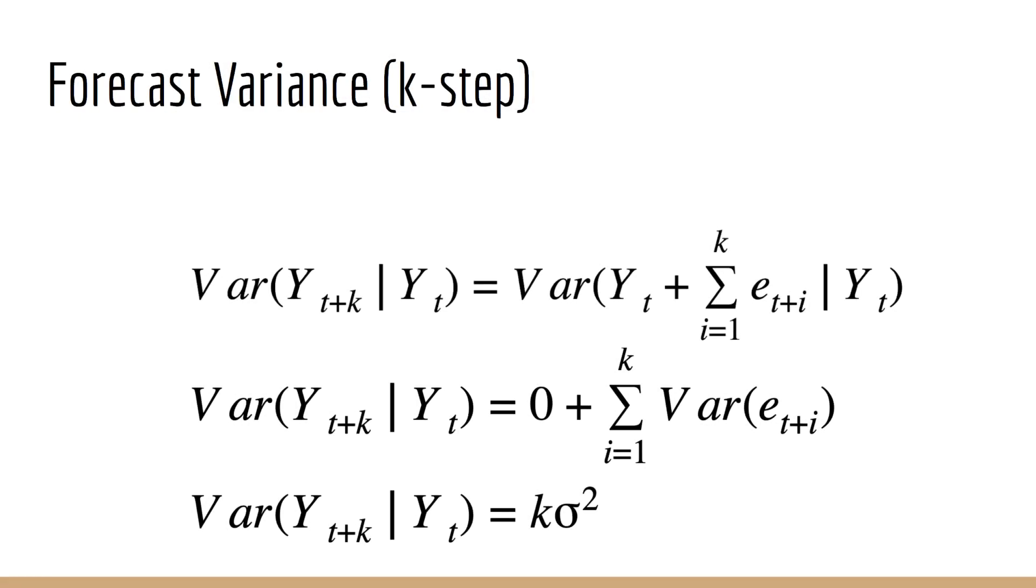We can take the variance of both sides as before, and importantly we can simplify it the same as before by making the variance of the sum into the sum of variances. This is allowed because all the error terms are iid, meaning that they are all independent not just of Y(t) but also independent of each other. What we end up with is that the variance of the k-step ahead forecast grows linearly with k. It grows by the amount sigma squared for each step ahead that we want to predict. That makes sense intuitively - the farther into the future we want to predict, the more uncertain we become.